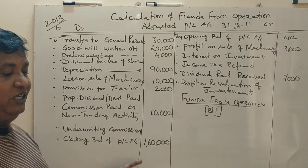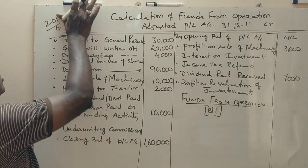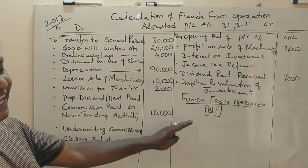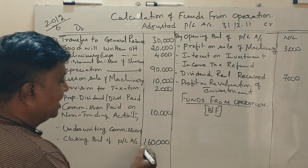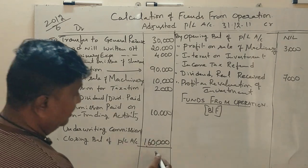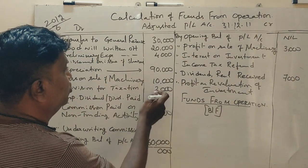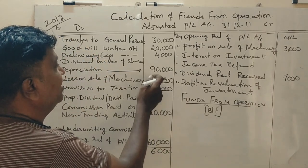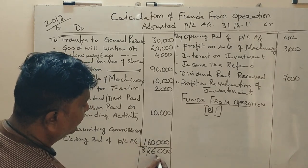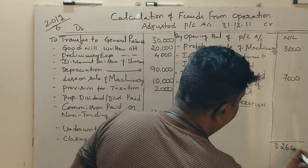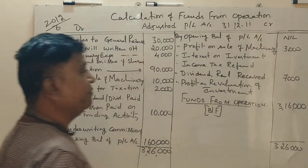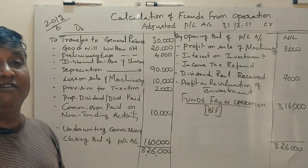Now for the total calculation: debit side items added together — two plus four is six, seven, eight, seventeen, nineteen, twenty-two, two plus one is three — giving three lakh sixteen thousand rupees total.